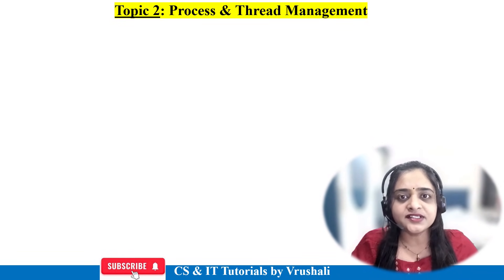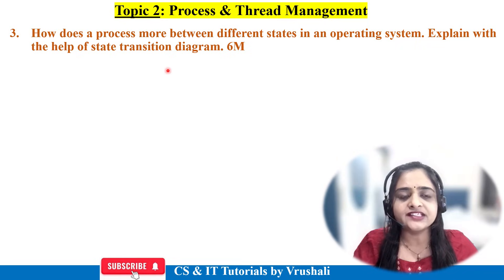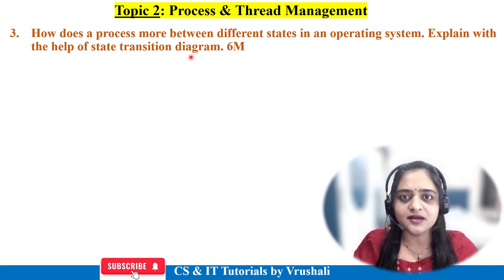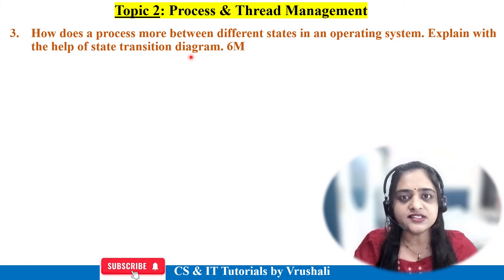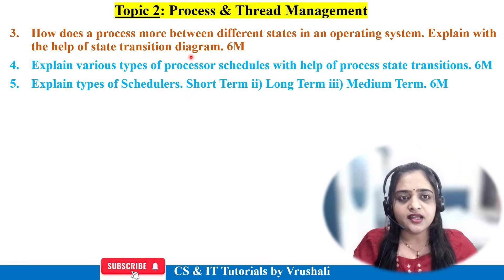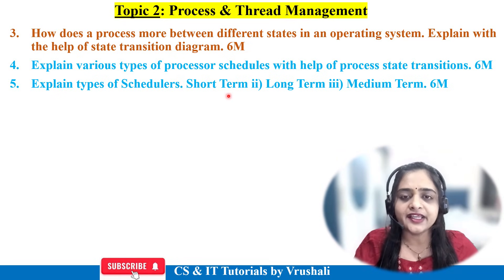As per the theoretical questions, they have asked: how does a process move between different states in an operating system? Explain with the help of a state transition diagram — diagram is compulsory here. You have to explain the state transition diagram and also explain the components of each state for six marks. After that, they have asked questions on the scheduler topic: explain types of schedulers like short-term, long-term, and medium-term scheduler for six marks, with two marks each.